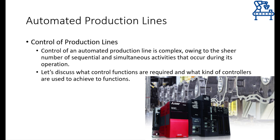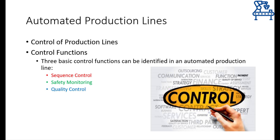No matter which configuration or work transportation system is being used, whether synchronous or asynchronous, and no matter how many workstations are along the length of the line, there are numerous — sometimes hundreds or even thousands — of operations that need to be performed simultaneously and repeatedly. Definitely, some kind of computerized controller needs to control everything with high reliability. Generally speaking, there are three different kinds of functions a controller of an automated production line has to carry out: the first is sequence control — the sequential control of machine tools and work transportation system; the second is safety monitoring — ensuring all systems operate within safe bounds; and lastly, quality control — ensuring operations on the work unit achieve the desired quality.